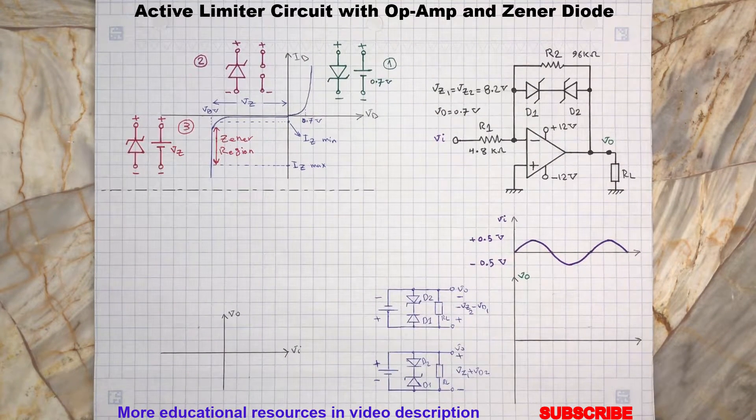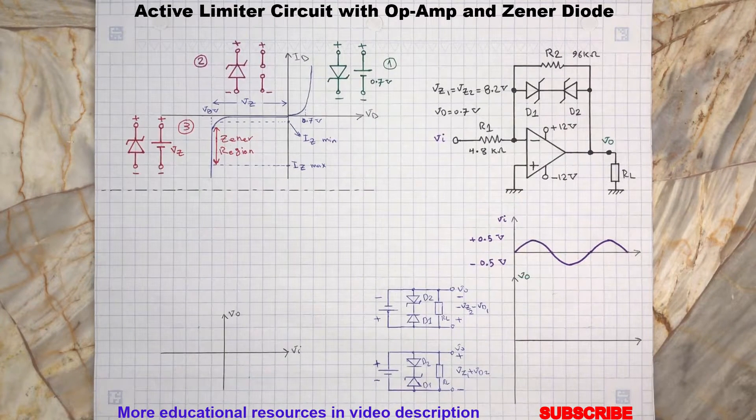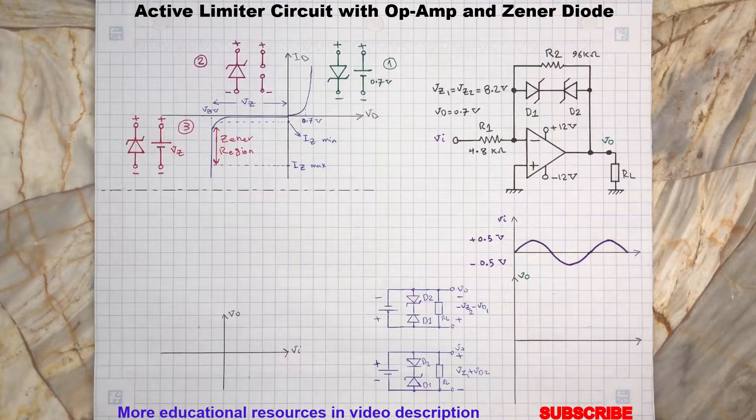A forward bias condition is established by applying a positive potential to the anode and a negative potential to the cathode.